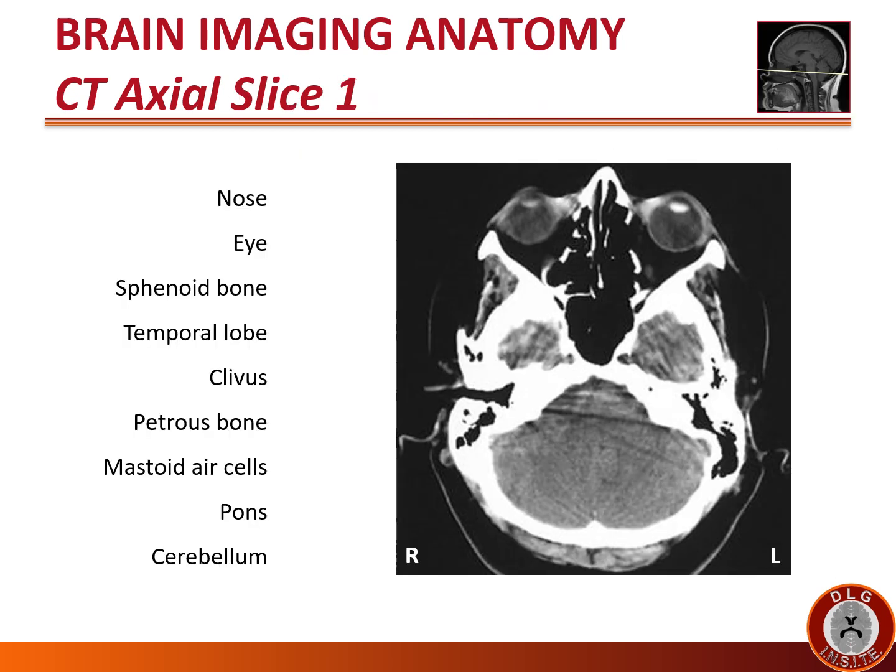We will now view multiple CT scan axial images in the same patient demonstrating normal anatomy. In the upper right corner of each slide is a sagittal MRI showing you the level of the slice depicted. See if you can identify the structures listed on the left before proceeding.